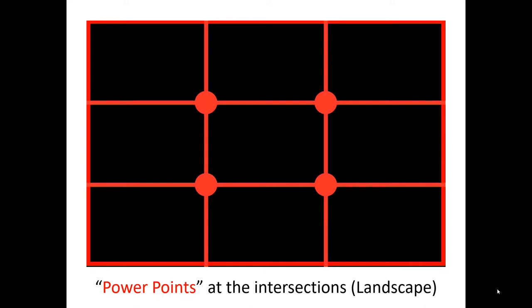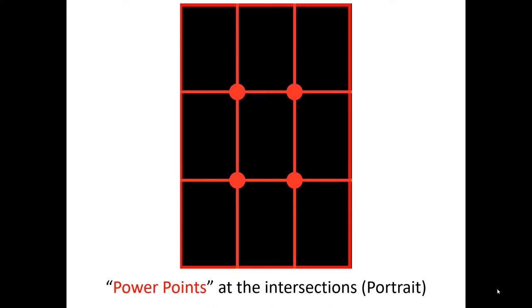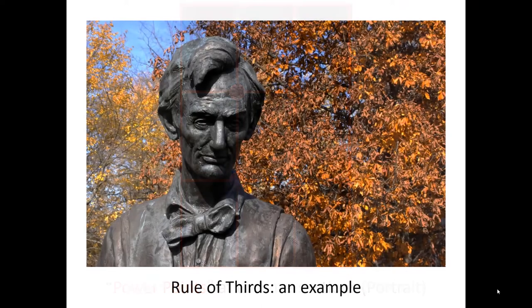This works both when holding your camera in landscape mode, where the picture is wider than it is tall, or in portrait mode, where it's tall from bottom to top. The same rule of thirds works both ways, and we should be looking for the power points.